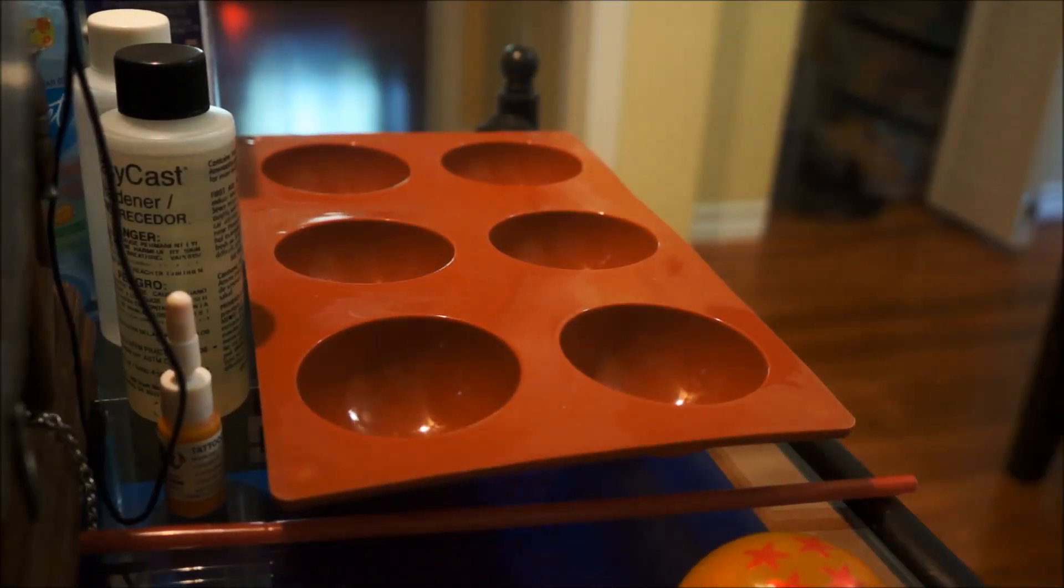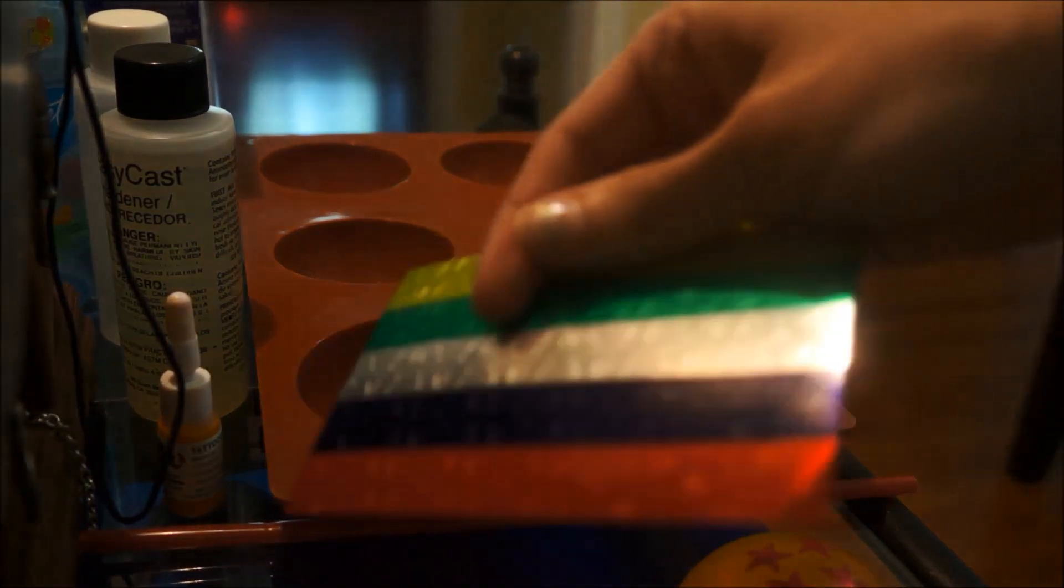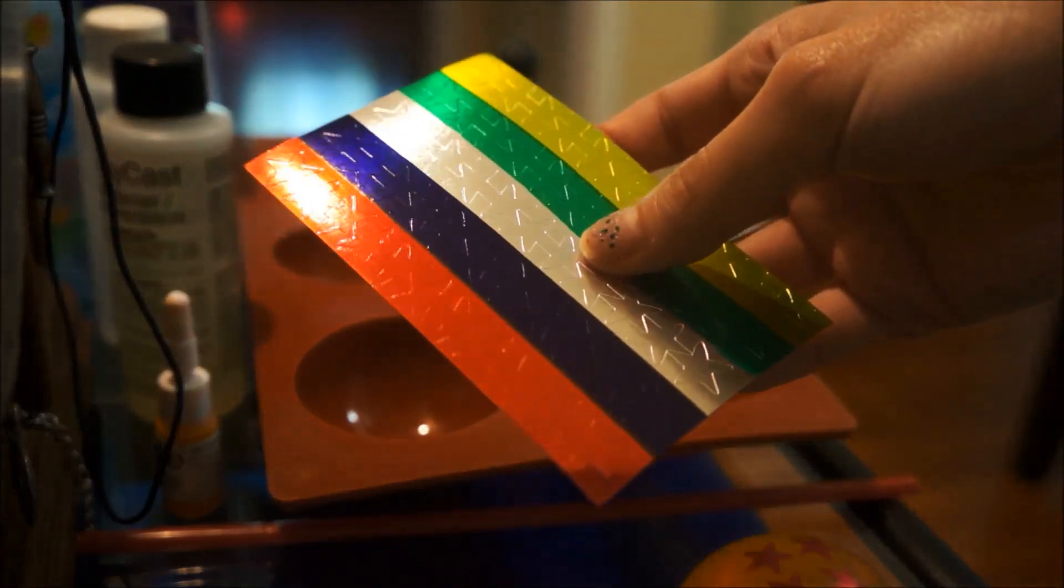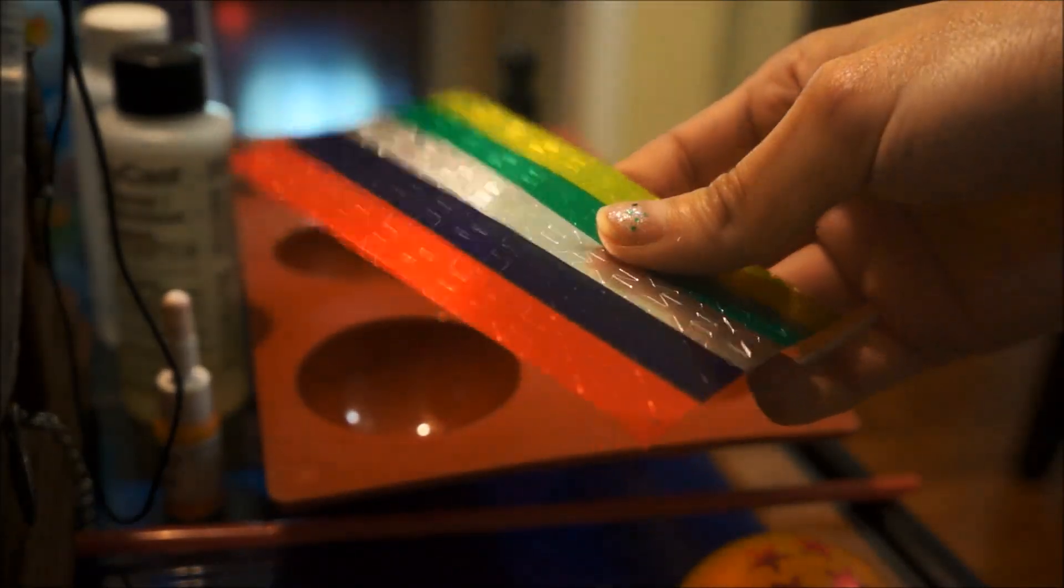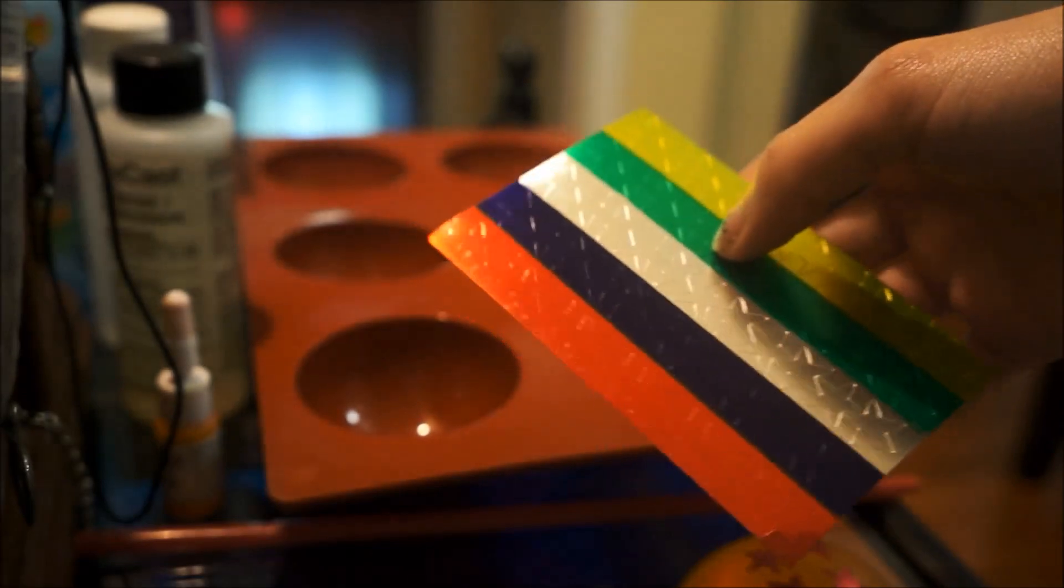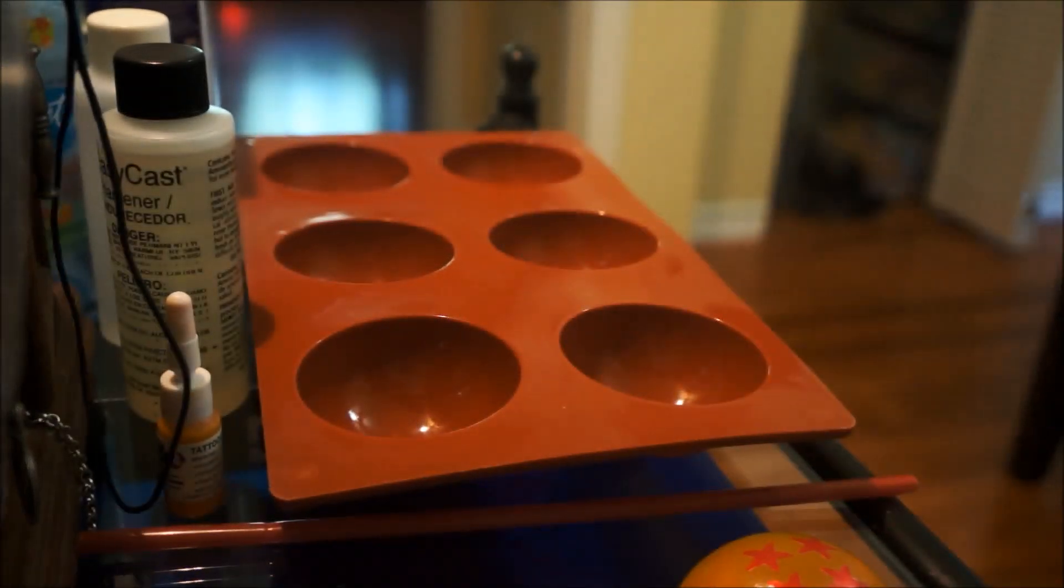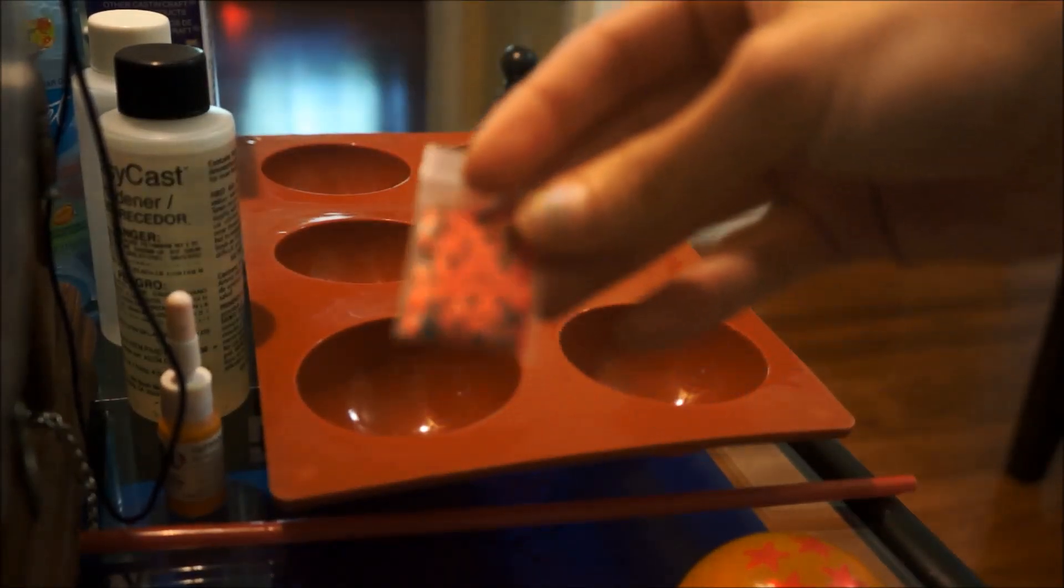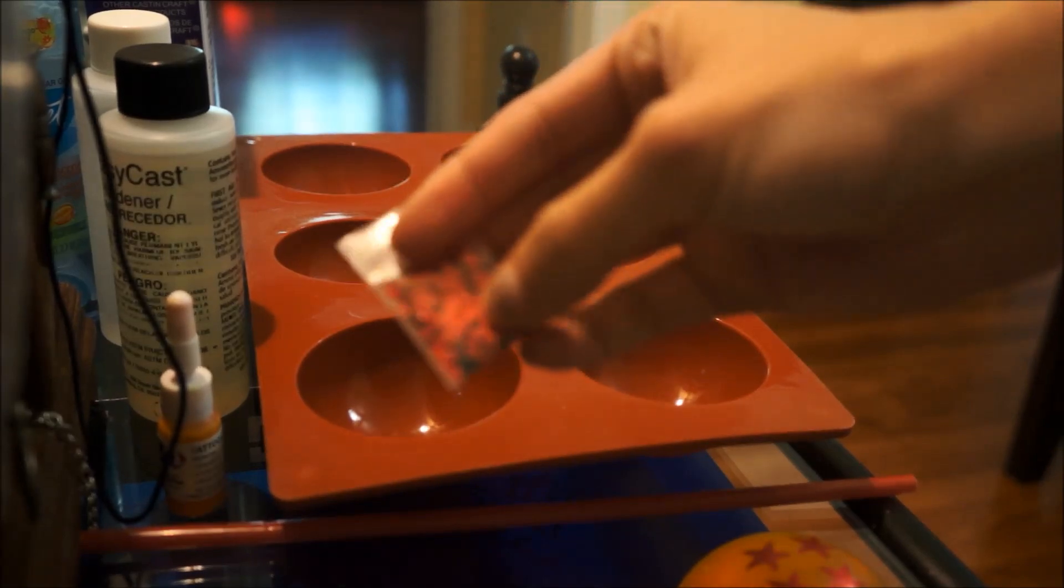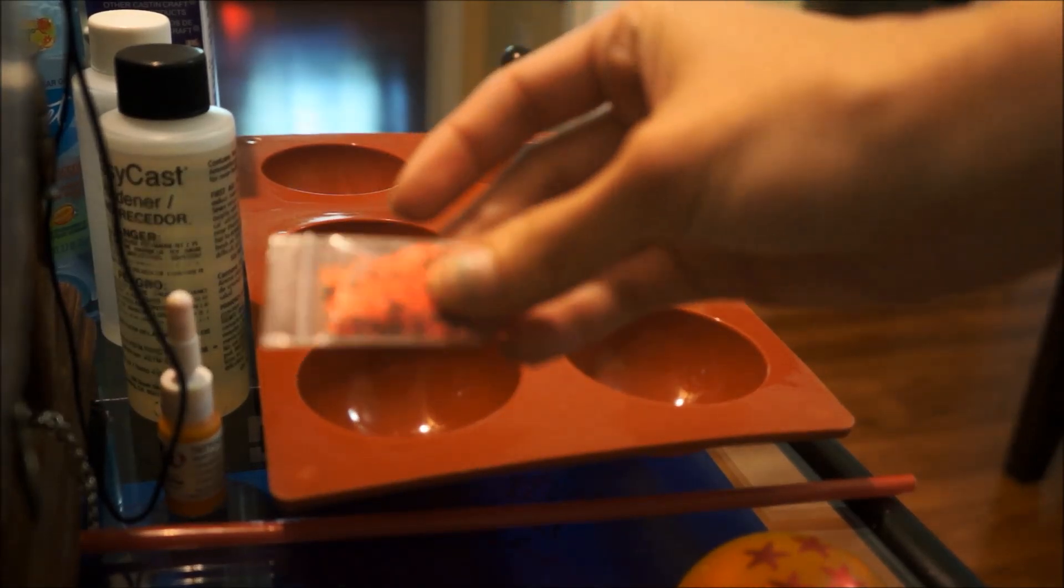And you're also going to need some red stars. I picked up these foil stickers in a pack and I'm going to use the red ones. If you're making smaller ones and these are too big, you can also use stars that are really small. These are for nail art.